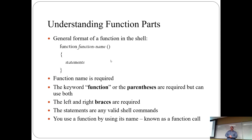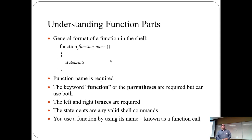The general format of a function in the shell looks like: 'function functionname() { statements }'. That should look somewhat familiar. What's missing compared to Java is the public/private/protected access modifiers, because Bash is not object-oriented. It also doesn't have a return type because Bash scripts are typeless — so there's no point having a return type.